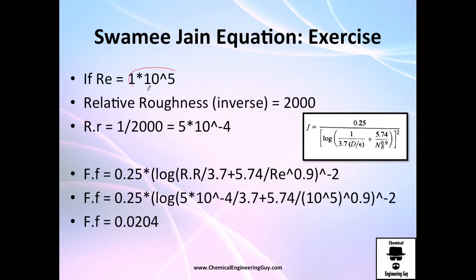So we got this Reynolds number and we got the relative roughness of 0.01, which inverting it will be 2000.